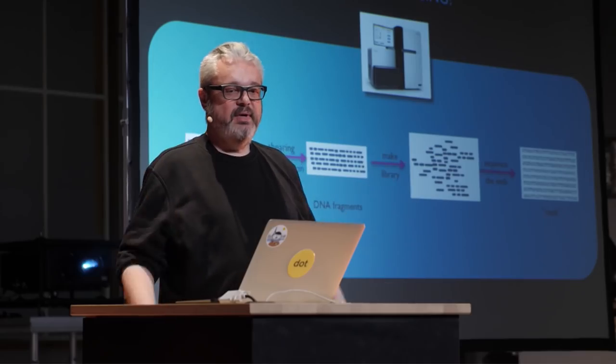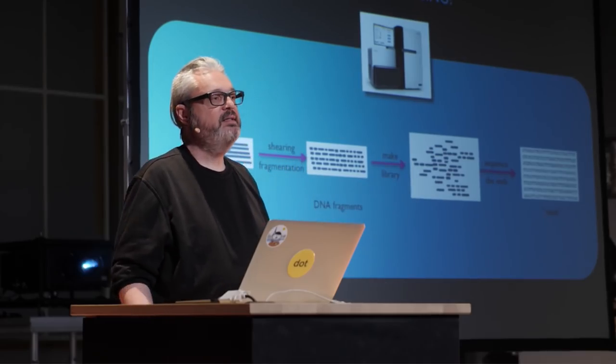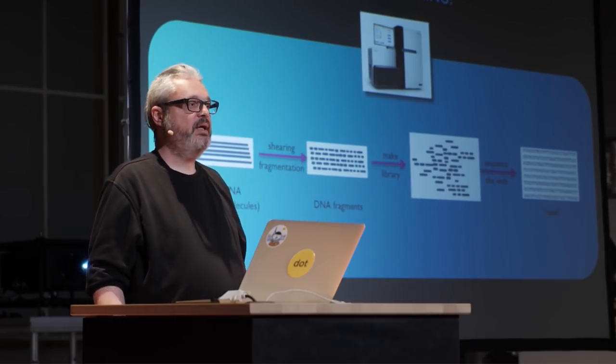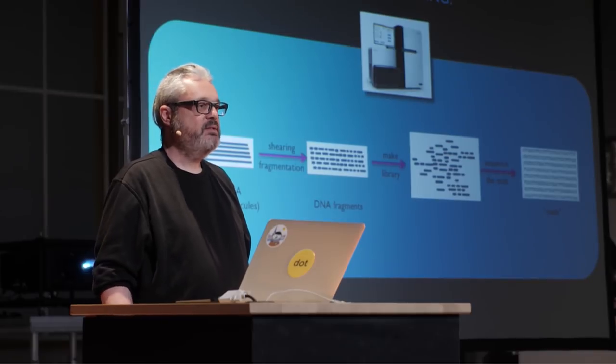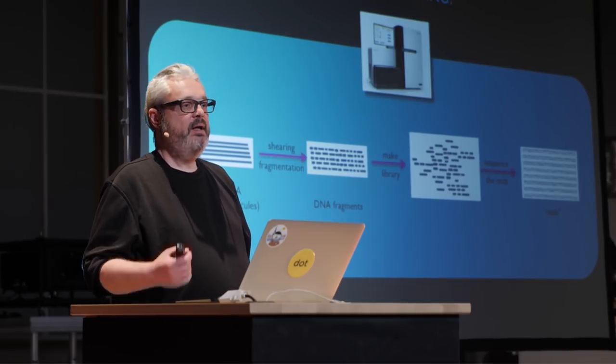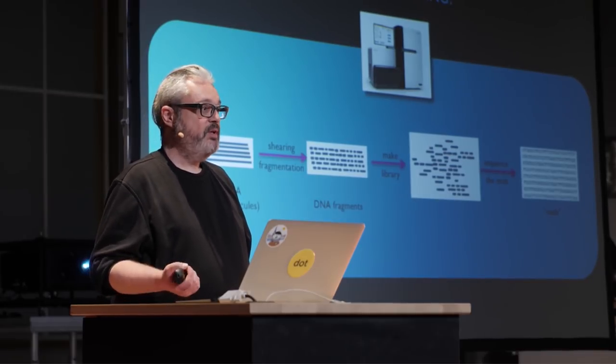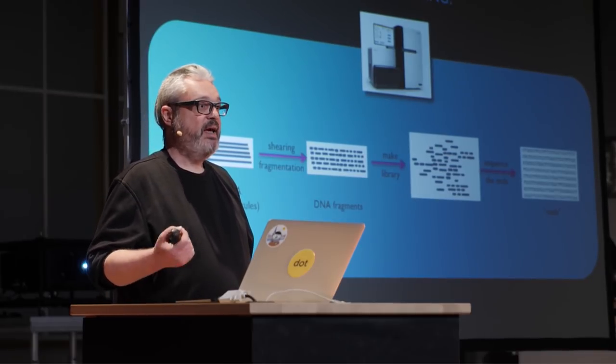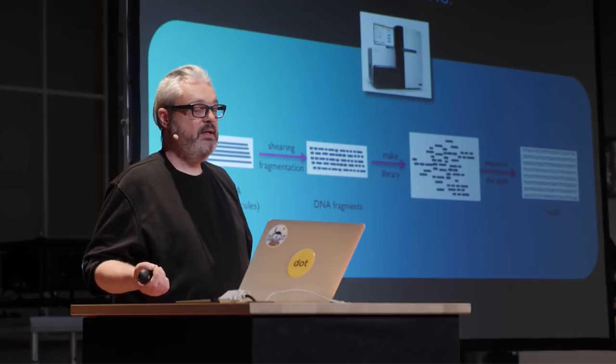To give you a bit of an idea of the dimensions: an intact human DNA consists of 3 billion base pairs. Each base pair is one of the letters G, A, T, or C, and the fragments that come out of these machines are typically about 150 base pairs.